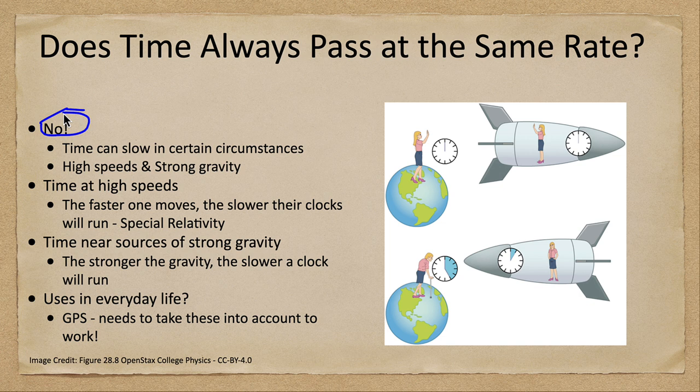So what happens with time at high speed? This is called time dilation. The faster one moves, the slower the clocks will run. Here we have what is sometimes known as the twin paradox, where you have two twins—one stays on Earth, the other goes on a trip at a good fraction of the speed of light.